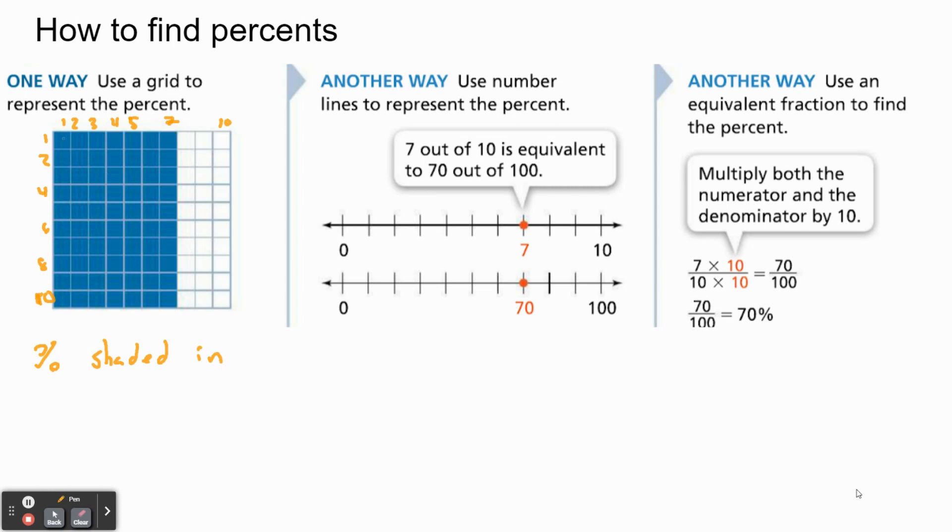Now you could sit there and go 1, 2, 3, 4, 5, 6, 7, 8, 9, 10. I think a much faster way would just be to do some multiplication. So we see that we have 7 here, which I kind of failed at dotting, but 10 times 7 would be 70. So we can say that we have 70% shaded in.